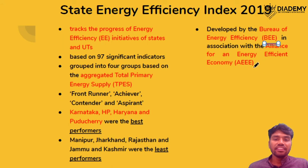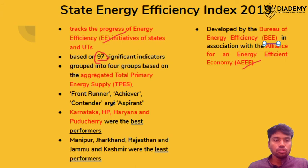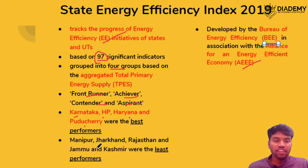The State Energy Efficiency Index is developed by the Bureau of Energy Efficiency and the Alliance for an Energy Efficient Economy. It tracks the progress of energy efficiency initiatives across states and Union Territories using 97 significant indicators. States are grouped into four categories: Front Runner, Achiever, Contender, and Aspirant. Top performing states are Karnataka, Himachal Pradesh, Haryana, and Puducherry, while the least performing are Manipur, Jharkhand, Rajasthan, and Jammu & Kashmir.